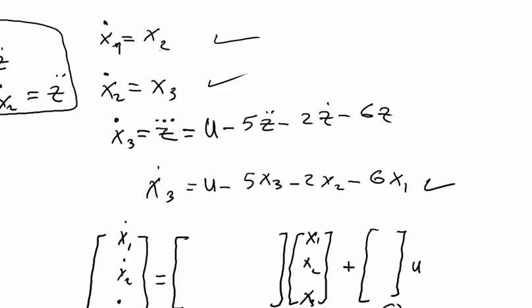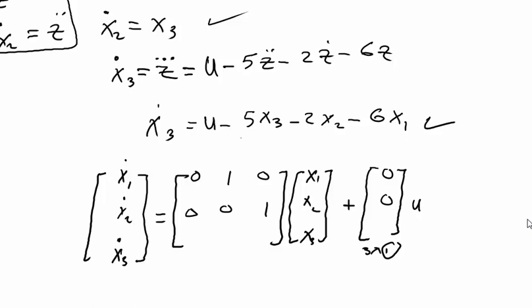x1 dot is just x2, so we have [0 1 0] and we don't have a u term, so we get 0 here. x2 dot is x3, so [0 0 1] with 0 for u. x3 dot is u minus 5x3 minus 2x2 minus 6x1, so [-6 -2 -5] with 1 for u. This is the state equation.